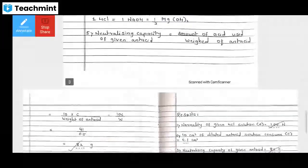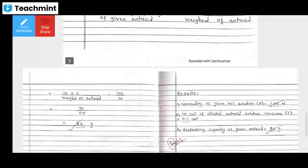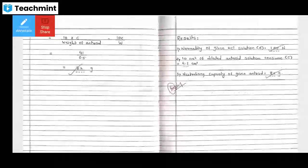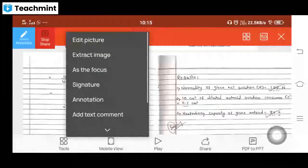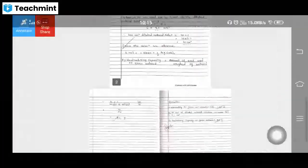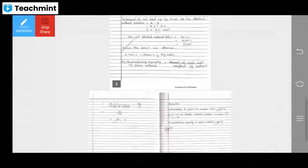From these values we can easily find the final conclusion: the neutralizing capacity of given antacid equals amount of acid used divided by weight of antacid. The amount of antacid is 10 times C, and weight of antacid is W. So 10C equals 0.582 grams. This is the final answer. Results: normality of given HCl solution is 1.05, neutralizing capacity of given antacid is 82 grams. In this way we perform the experiment.